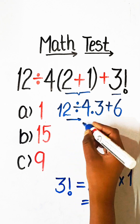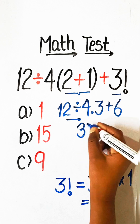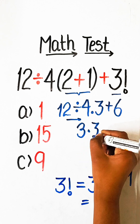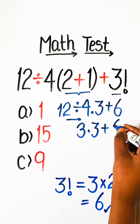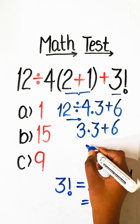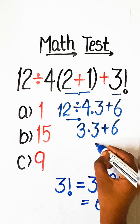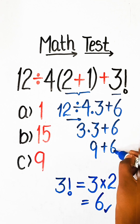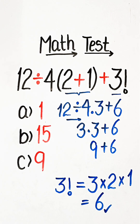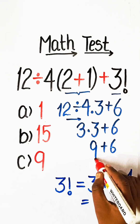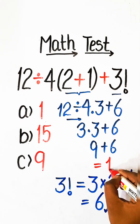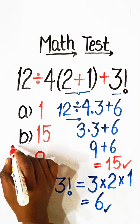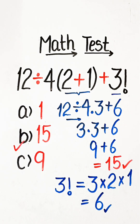12 divided by 4 is 3, multiplied by 3 plus 6. 3 threes are 9, plus 6. 9 plus 6 equals 15. So, 15 — Option B will be our correct answer.